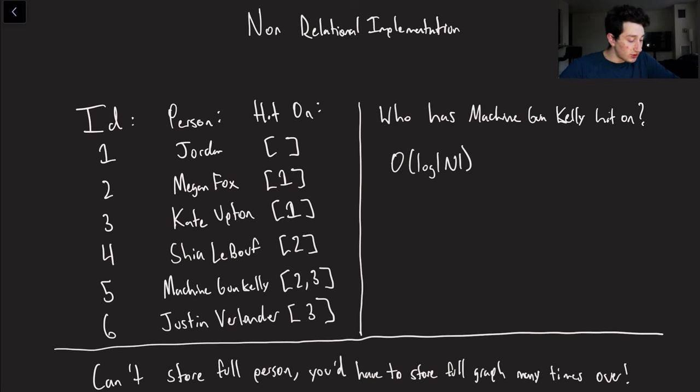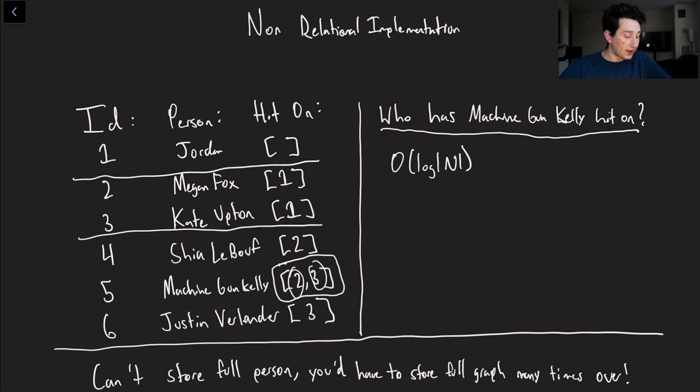So again let's use Machine Gun Kelly as our example. So we can see pretty easily right off the bat due to our great data locality that he's hit on people two and three. So we don't have to go to another table and do a binary search. So we got rid of you know scaling our complexity due to the number of edges. However in this case we still do have to take two and take three and do a binary search over here in order to find them. And so it's still becoming more and more expensive to traverse our graph as the number of nodes in our graph increases.